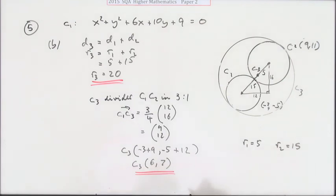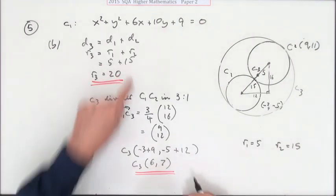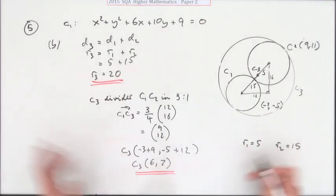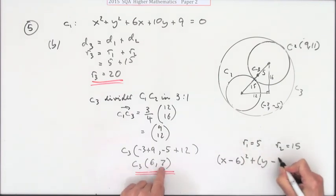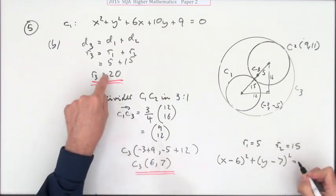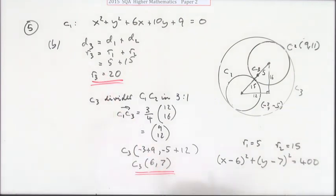And then put that all together for the equation of the circle. Radius 20, center 6, 7. Equation of the circle: x minus the x coordinate, y minus the y coordinate, equals the radius squared, which is 400.